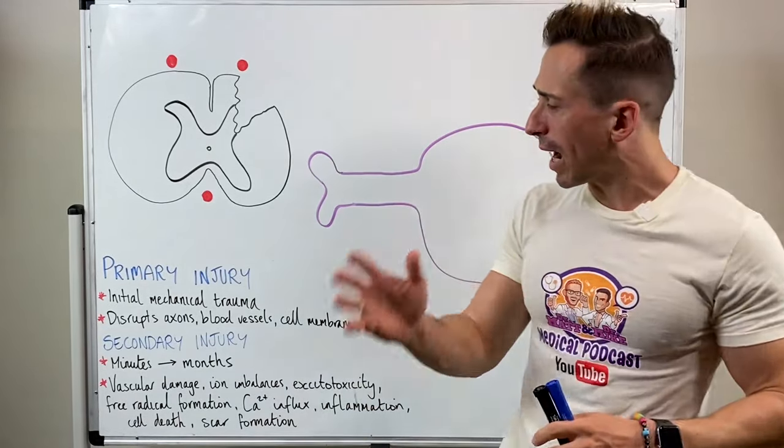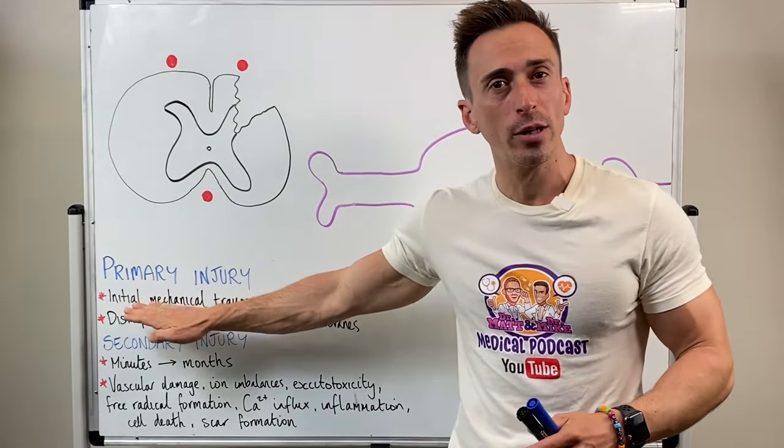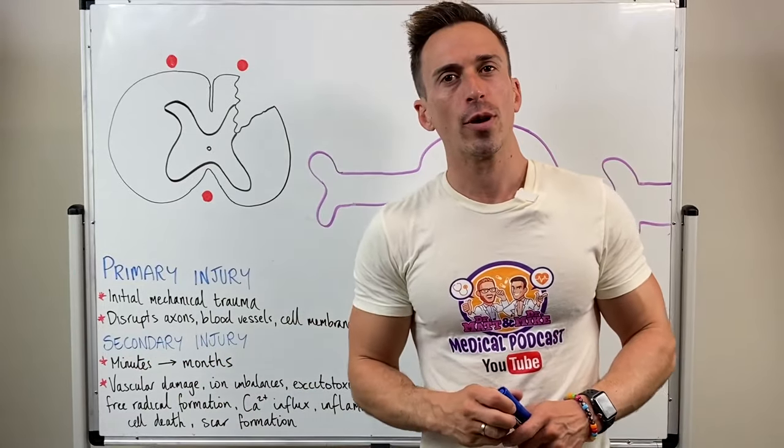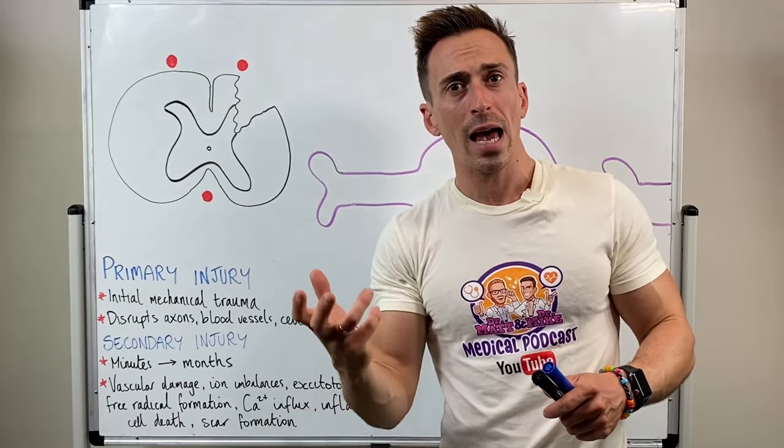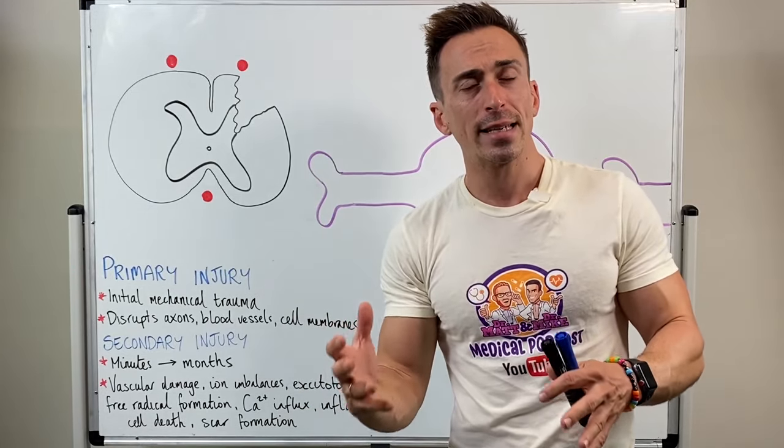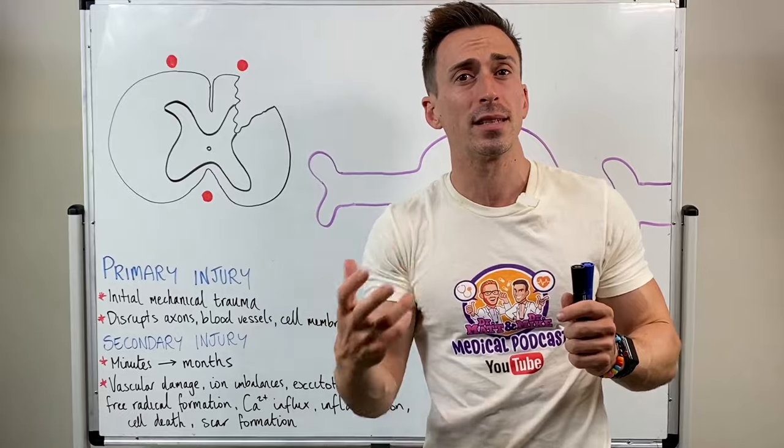You can divide spinal cord injury into what's happening in the primary injury and the secondary injury. Simply put, the primary injury is the direct mechanical trauma that's occurring at the spinal cord, and usually it's some form of impact with persistent compression.